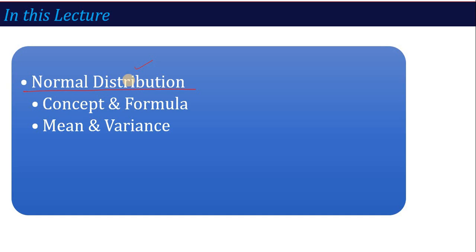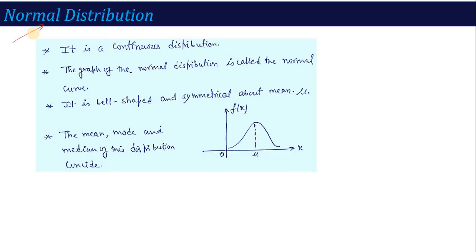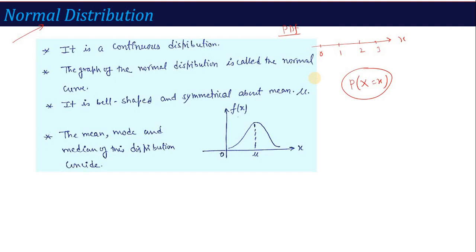What do you mean by normal distribution? We have studied discrete distribution. Discrete means that for a particular value of x — if x is 0, x is 1, x is 2, x is 3 — for each particular value, we can calculate our PDF function and calculate the probability. We can make a table where we have P(X = x) and calculate every x value. But if you represent it in a curve, then a discrete curve is generated.